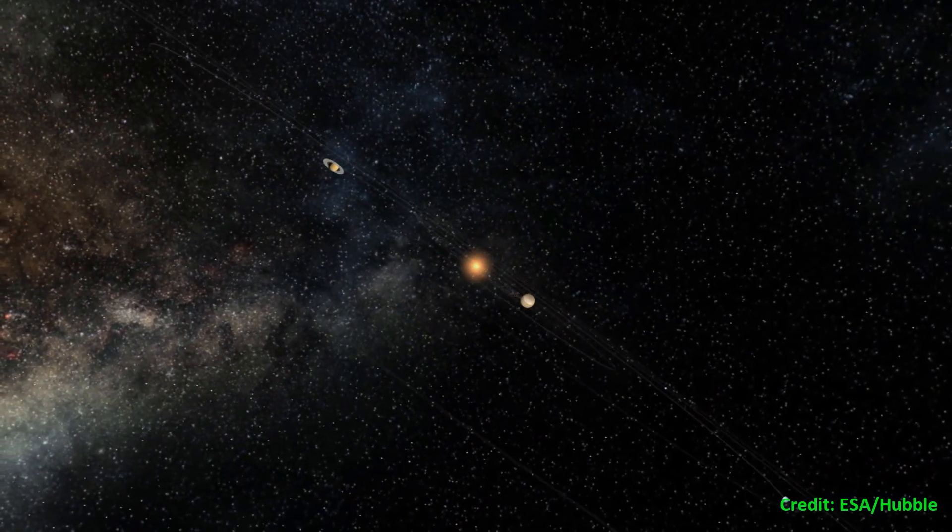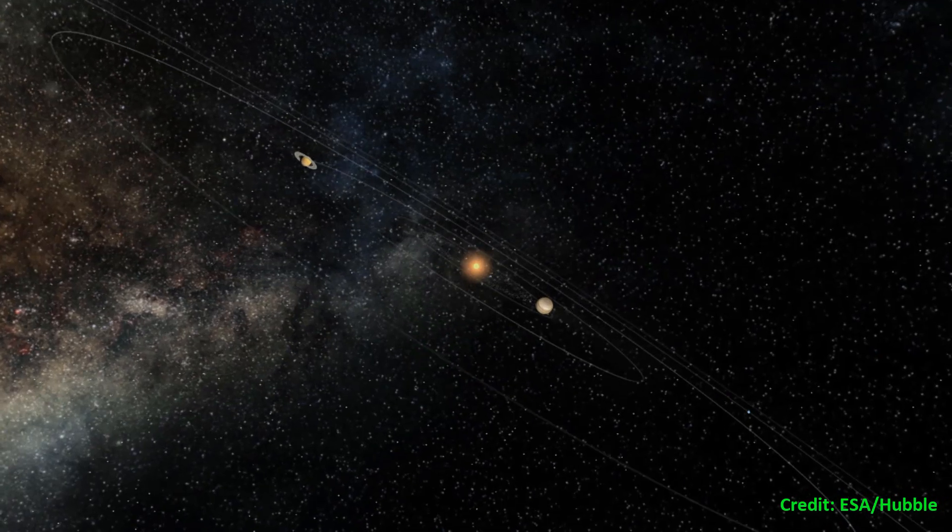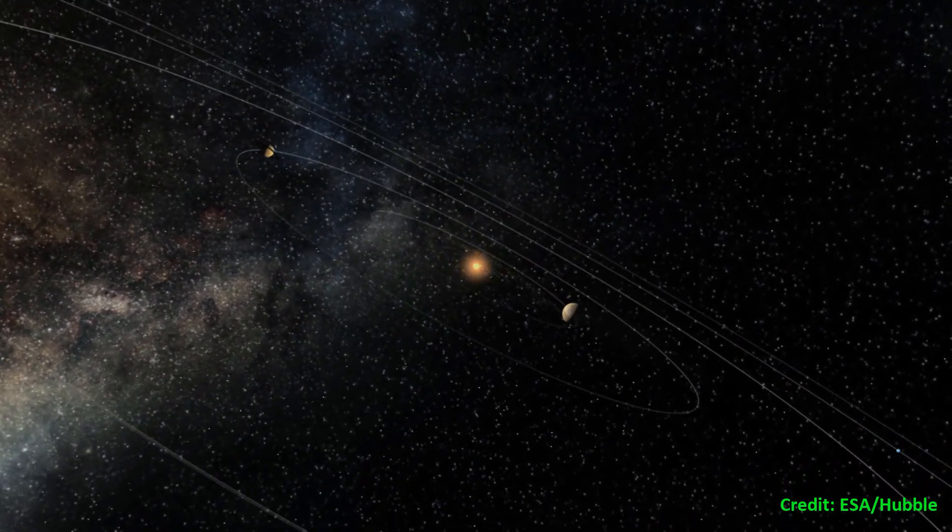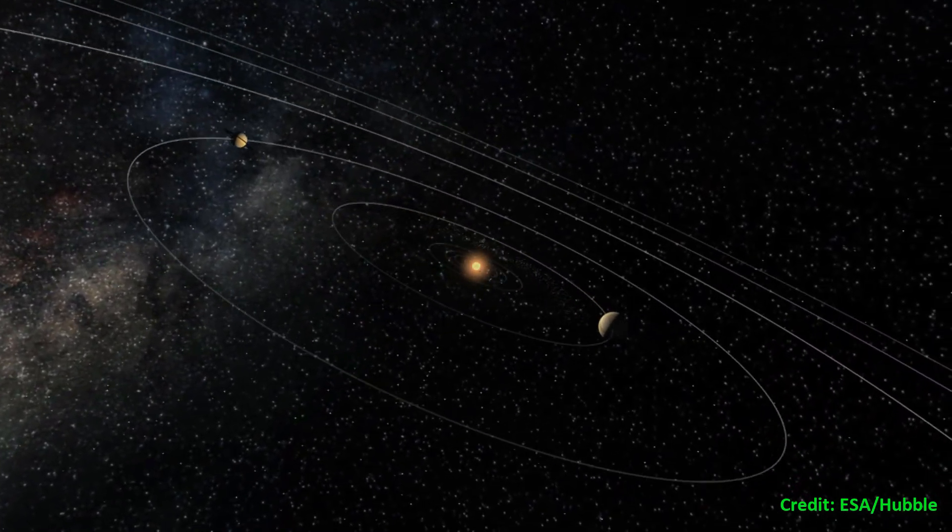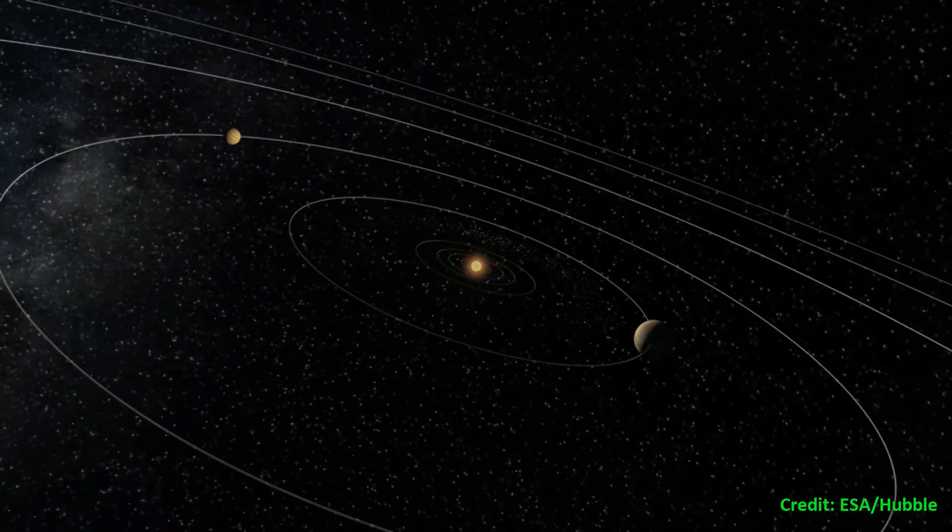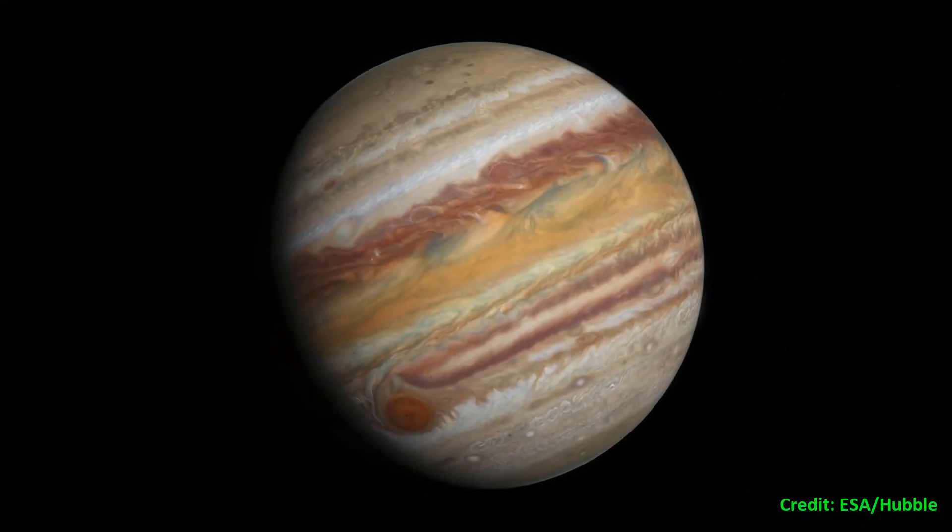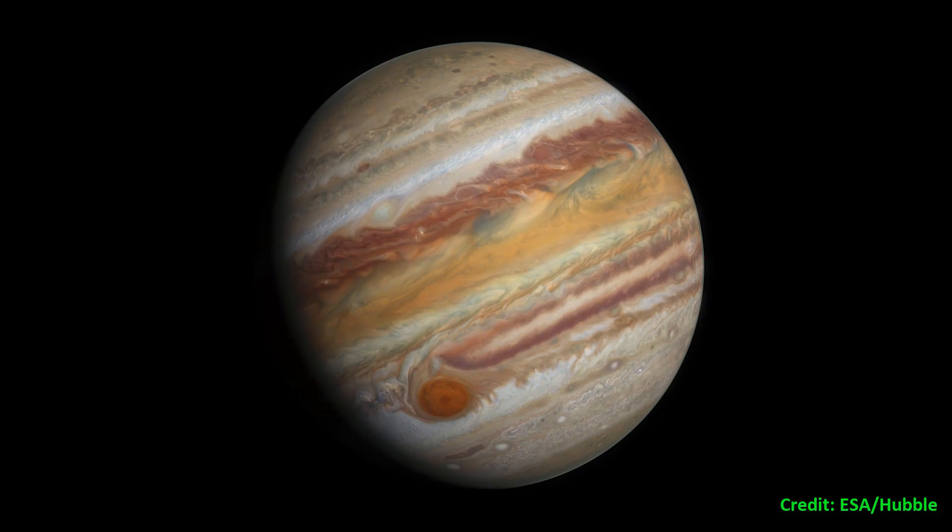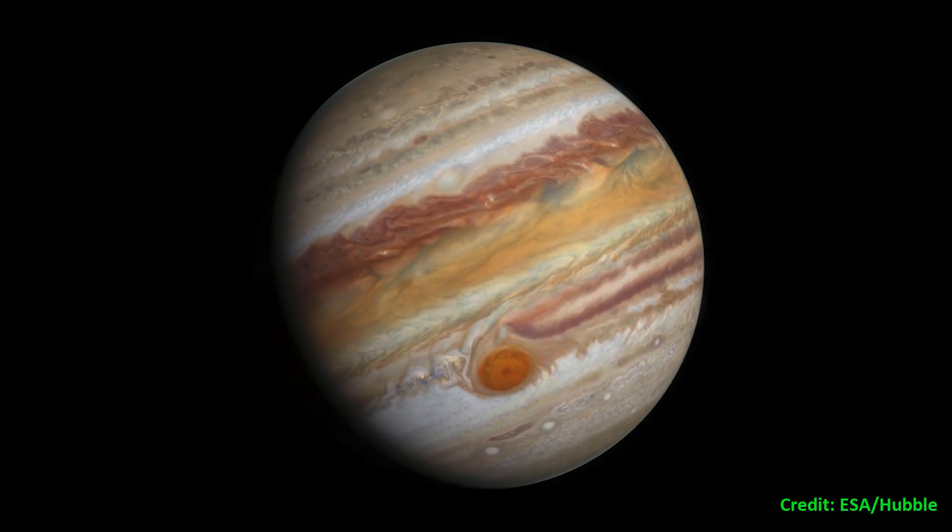Hubble has revolutionized planetary science in a number of ways through its precise observations of our own solar system. Hubble has charted the dynamic activity on Jupiter and its moon Io.